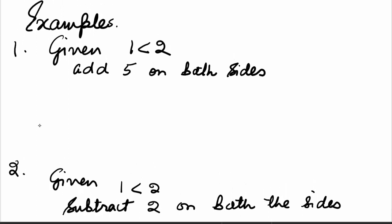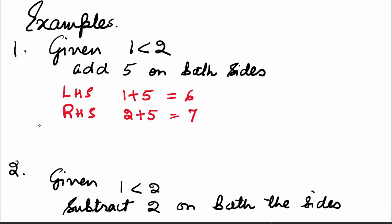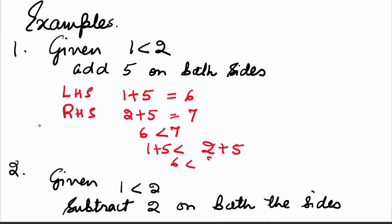In the first example, we are given 1 is less than 2. Now add 5 on both the sides. The left-hand side will be 1 plus 5, which is 6, and the right-hand side will be 2 plus 5, which is 7. And you see that 6 is less than 7. We added 5 on both sides and the inequality still remains the same.